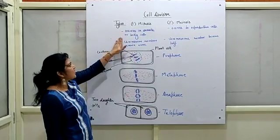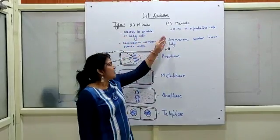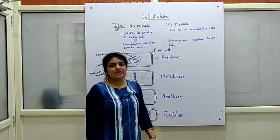Mitosis occurs in somatic or body cells, whereas meiosis occurs in reproductive cells.